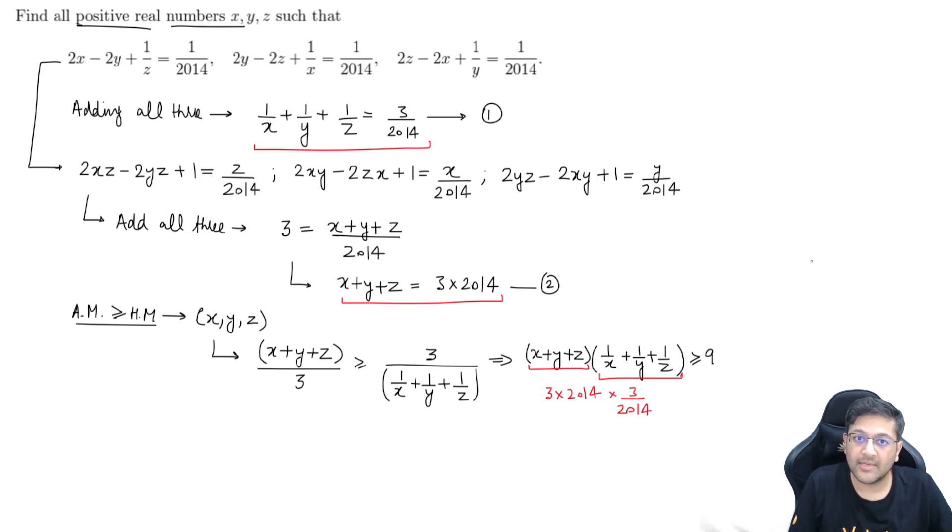You will put value, this value is how much x plus y plus z is 3 into 2014 and this value is further 3 upon 2014 from equation number 1. So you will observe that these terms are getting cancelled, 2014, 2014 it can be cancelled or 9 equal to 9. So that 9 is equal to 9. So, basically, the expression on the left hand side is attaining the value 9, which is the minimum value of the expression that we know.